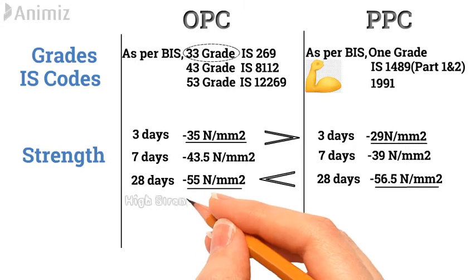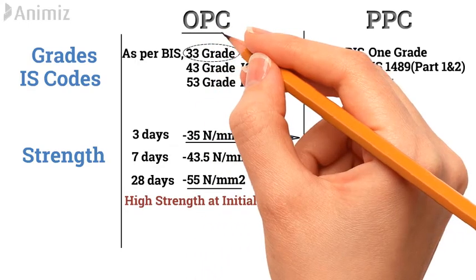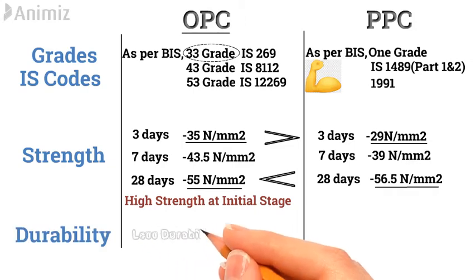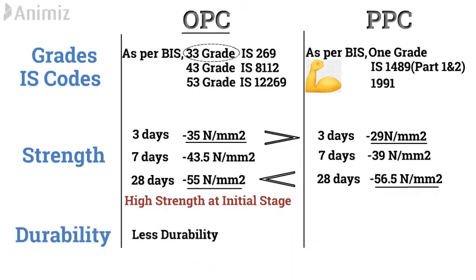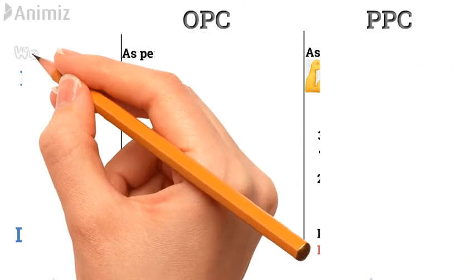So, it is clear that if you need high strength at the initial stage, then go for OPC. Durability: The durability of concrete made by using OPC is less than that of concrete made by using PPC, whereas the durability of concrete made by using PPC is higher. This means structures made by using PPC will last longer.